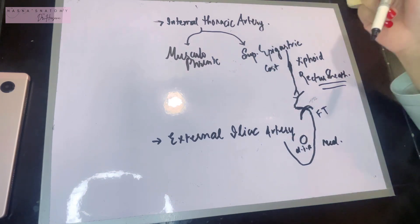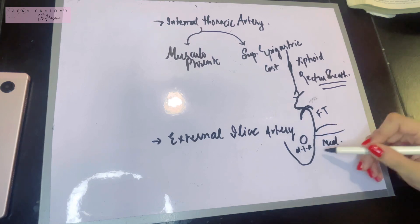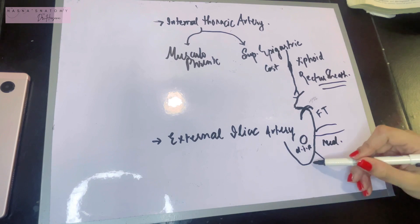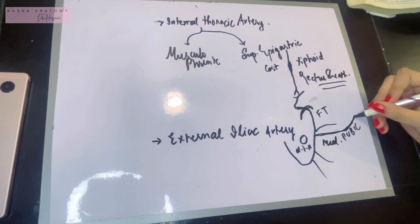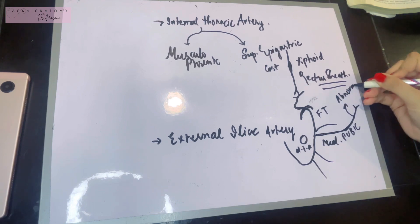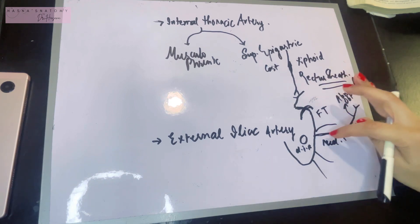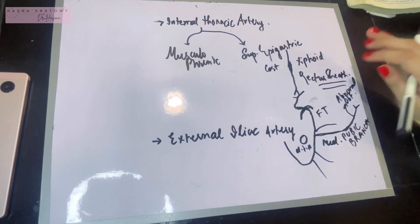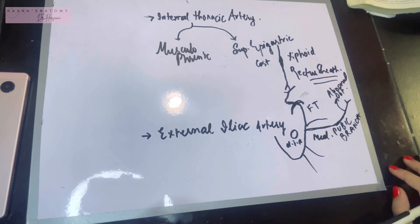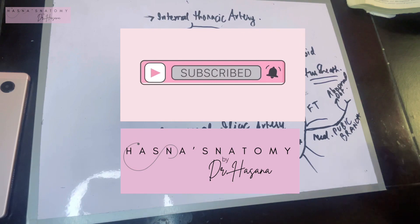Other arteries of the anterior abdominal wall include the musculophrenic artery, the deep circumflex iliac artery, and smaller intercostal and subcostal arteries. The inferior epigastric artery gives branches including the cremasteric branch, the pubic branch — which anastomoses with the pubic branch of the obturator artery — and cutaneous and muscular branches. Sometimes this pubic branch replaces the obturator artery, becoming the abnormal obturator artery. During femoral hernia surgery, rupture of this vessel can be fatal. Do subscribe, leave a like and comment — thank you for watching.